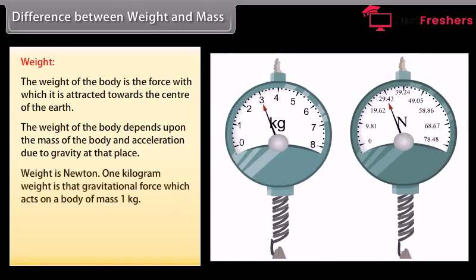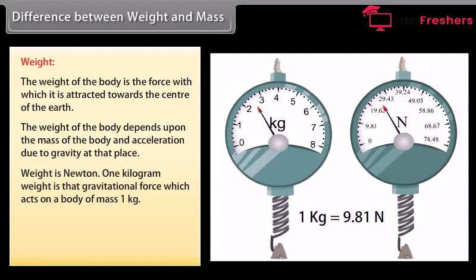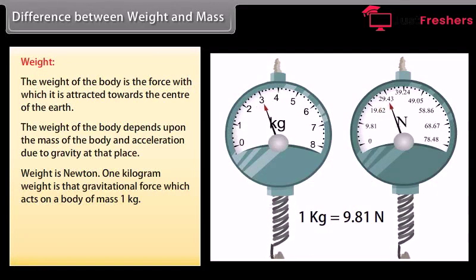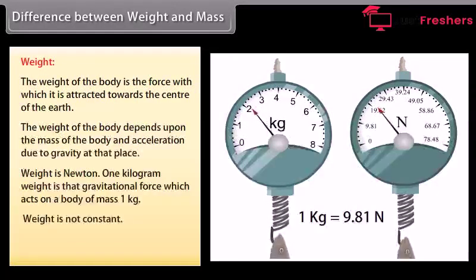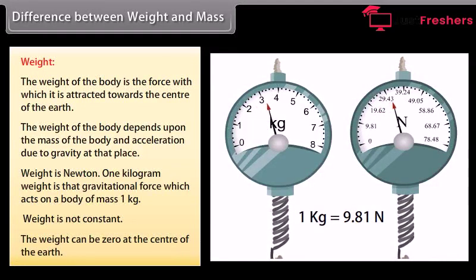Weight is measured in Newtons. One kilogram-weight is the gravitational force which acts on a body of mass one kilogram. Weight is not constant — it can be zero at the center of the earth.